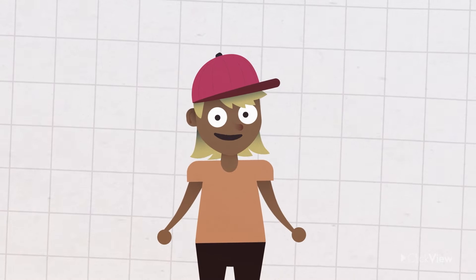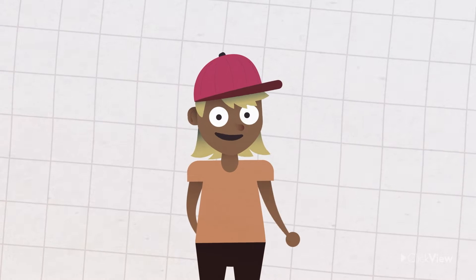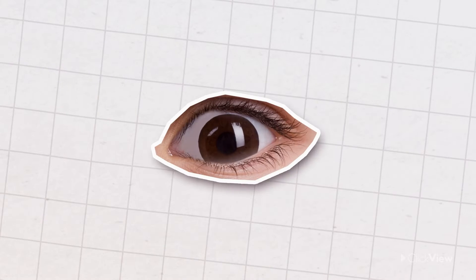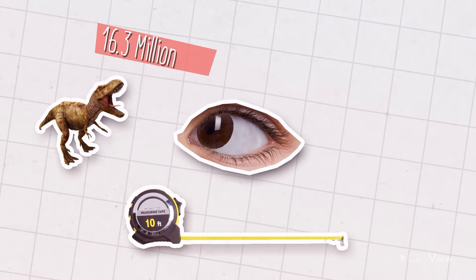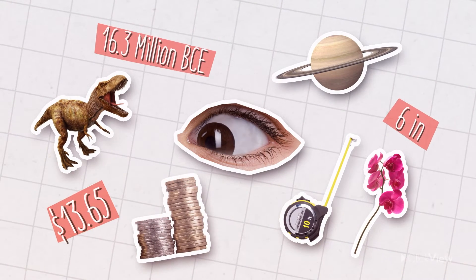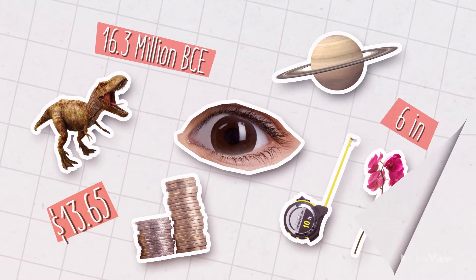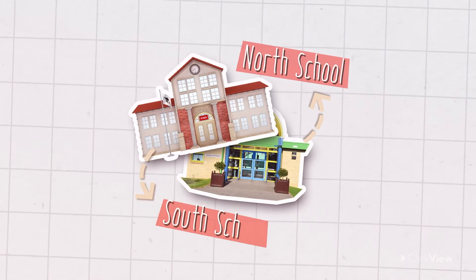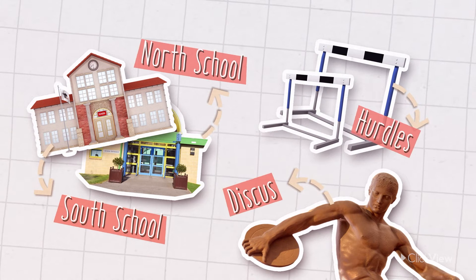We're going to collect lots of data today. Data is a general term for information, such as observations or measurements, and we can collect data on just about anything. Data can be words, such as the names of the schools that are taking part, or the names of the different events.